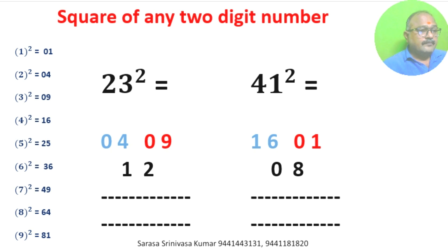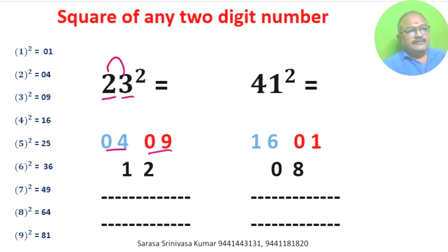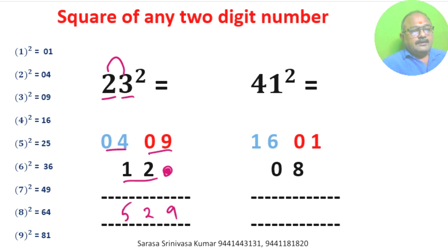23 square: square of 2 is 04, square of 3 is 09. 3 times 2 is 6, 6 into 2 is 12. We don't write anything in units place. 9, 0 plus 2 is 2, 4 plus 1 is 5. 23 square is 529.